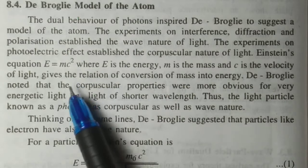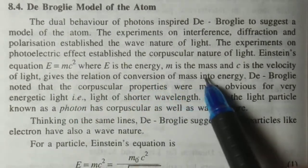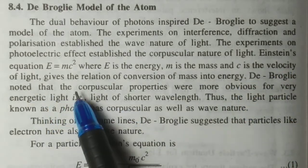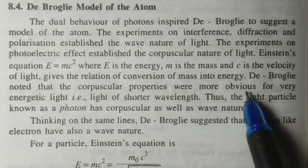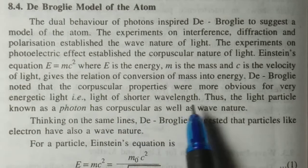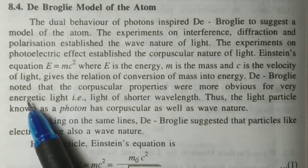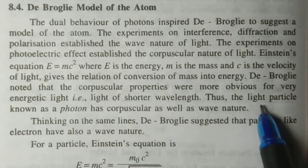The experiment on photoelectric effect established the corpuscular nature of light. De Broglie used Einstein's equation E = mc², where E is the energy, m is the mass, and c is the velocity of light. This relation is the conversion of mass into energy.